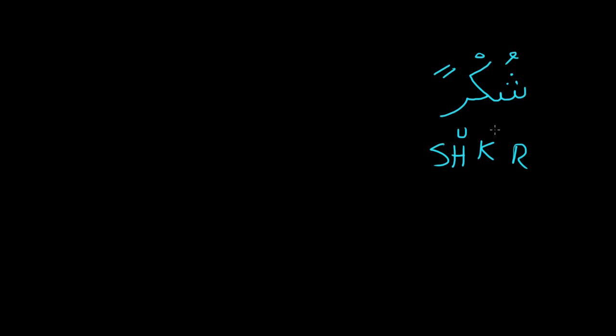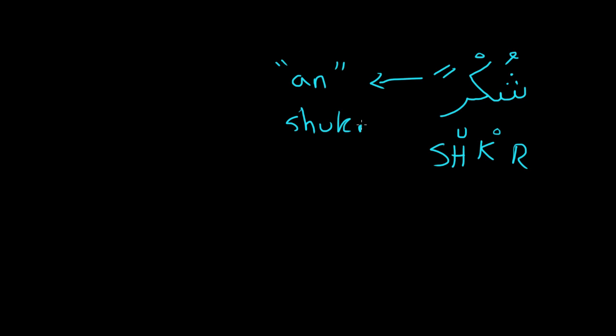Another example is the word 'shukr.' Ignore the double fatha right now — this is just a sheen, a kaf, and a ra, so this is 'shukr.' Now this doubling — when you see a doubling, it only happens at the end of a word. If you see a double fatha, it's going to make an 'an' sound. So remember, if you see a doubling it basically adds an invisible noon onto the fatha, making it 'shukran' — which means 'thank you.'